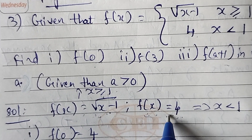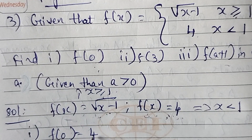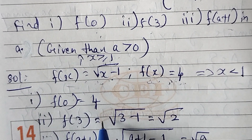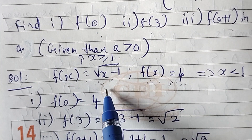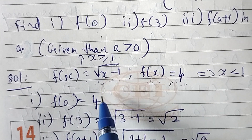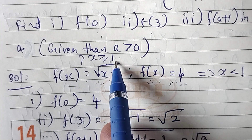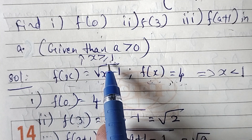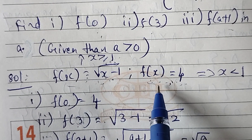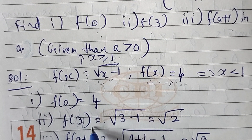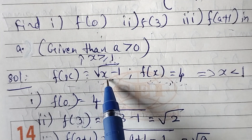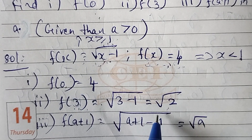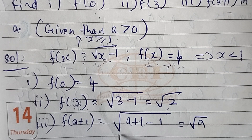For f of 3: since 3 is greater than or equal to 1, we use the first condition. So f of 3 equals square root of 3 minus 1, which equals square root of 2.